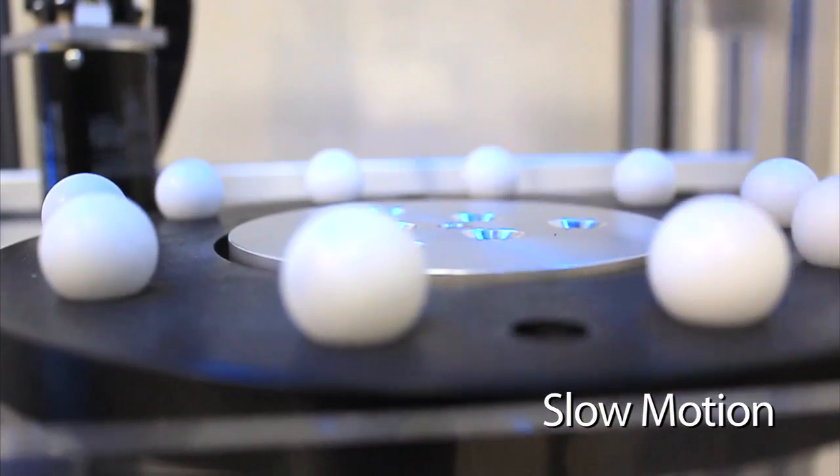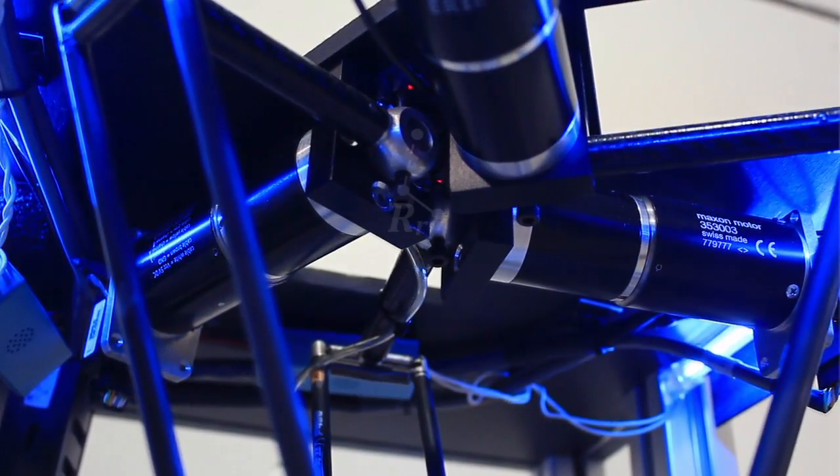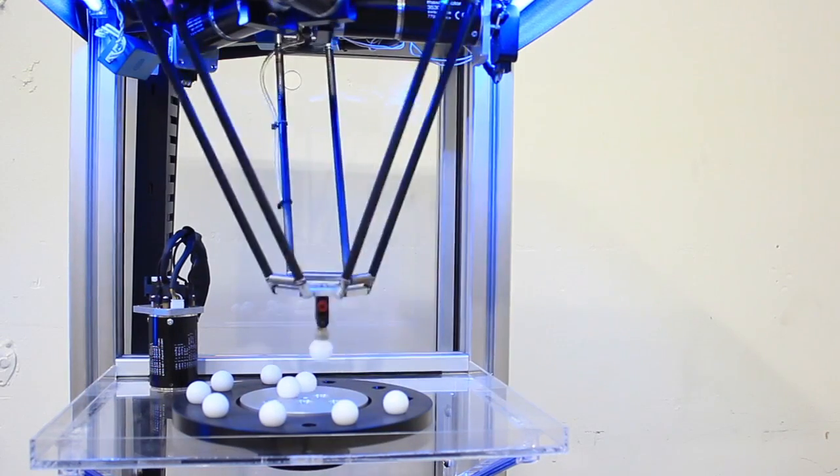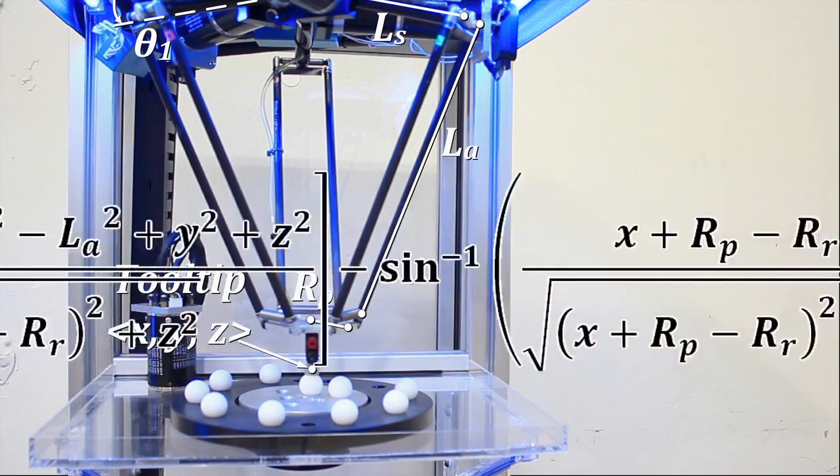This demonstrates the great agility you can achieve with Delta Tau controllers. Kinematic transformations are necessary when the relationship between the motors and the tooltip is mathematically non-linear, where standard linear axis definitions cannot be used.